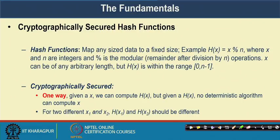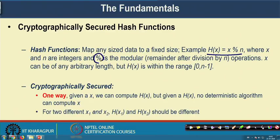A basic fundamental which is very useful in the context of Blockchain is the concept of a cryptographically secured hash function. A hash function is a function that maps any size data to a fixed size. For example, if we define a hash function like h(x) = x modulo n, where x and n are integers, the modulo is the remainder of the division by n. Whatever be the value of x, the value of h(x) will be in between 0 and n minus 1. This type of function we call a hash function.